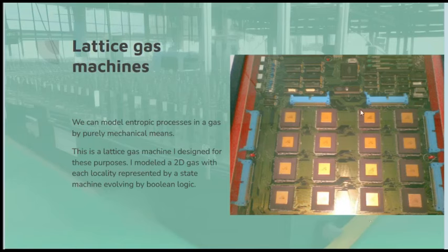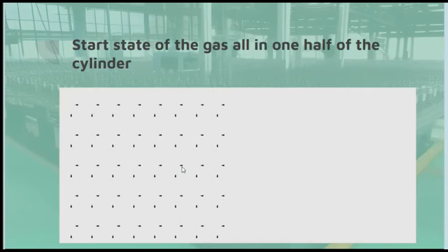The machine shown here is a lattice gas machine that I designed about 20 years ago. It was for modeling two-dimensional gases with each locality of the gas modeled by a state machine that evolved by Boolean logic. Each of these chips was capable of modeling a thousand locations, and in each direction 32 wires moved to the neighboring chip. So altogether I could model 16,000 locations in the gas in that array, and I could model the movements of the atoms by movements of bits following Boolean logic.